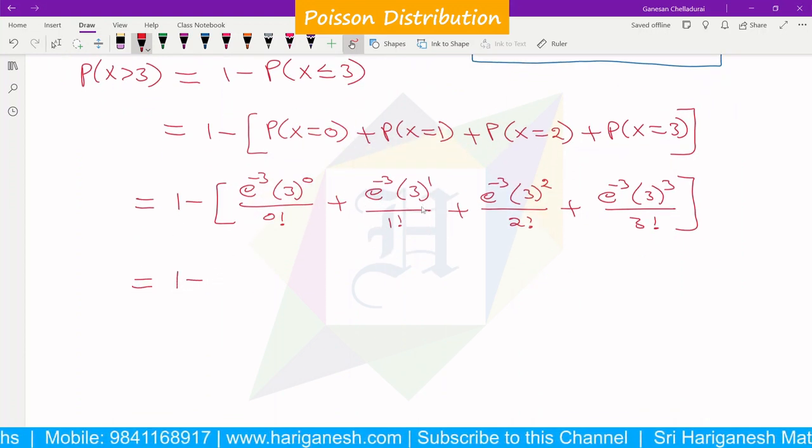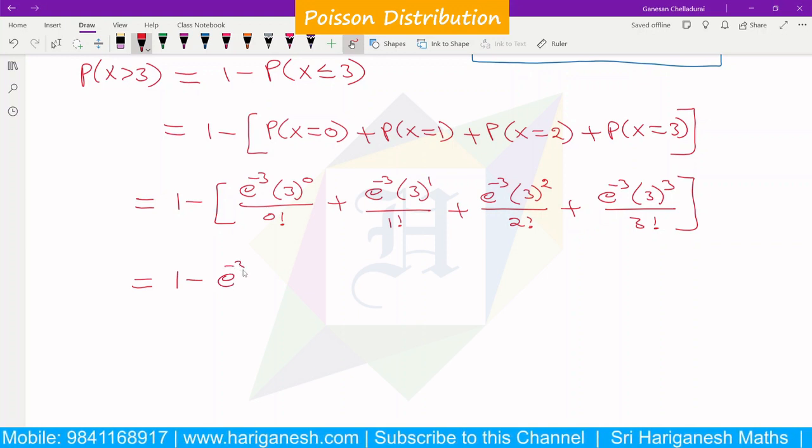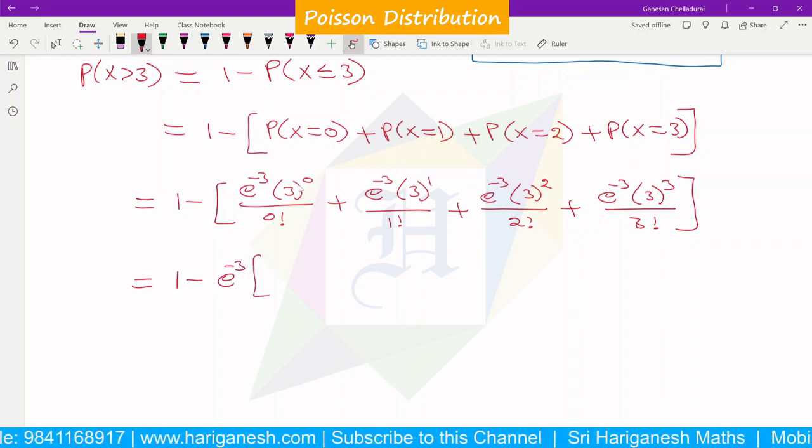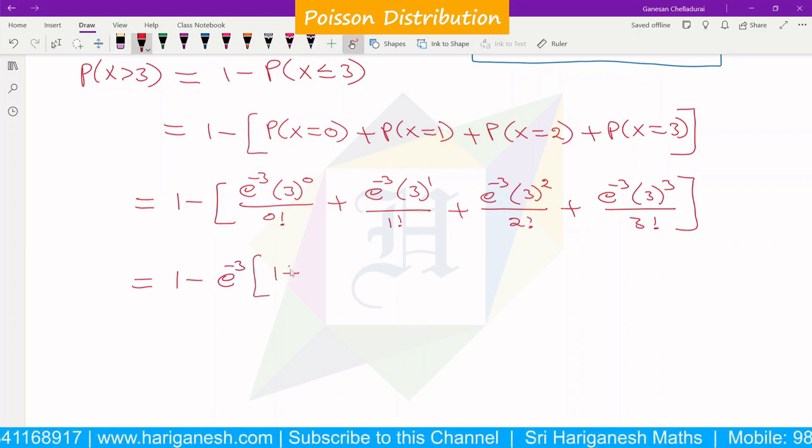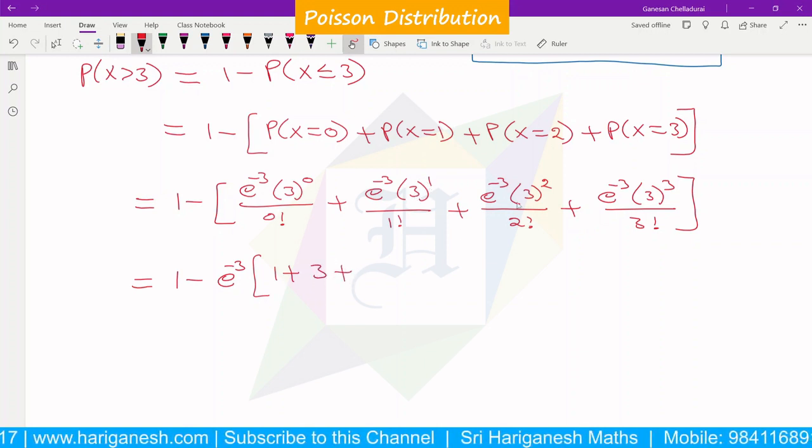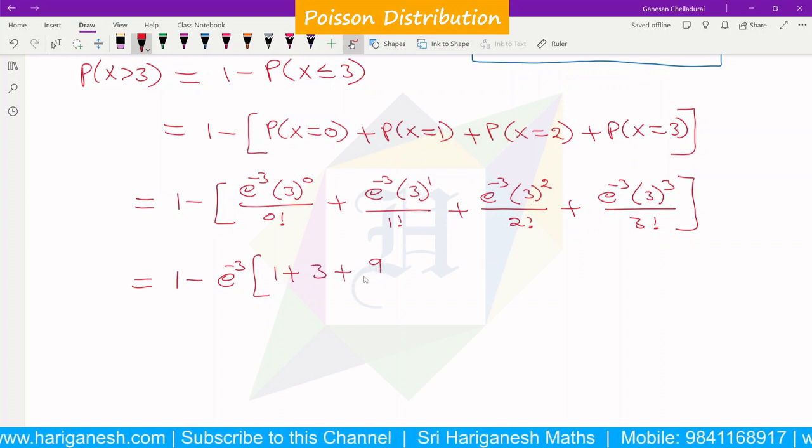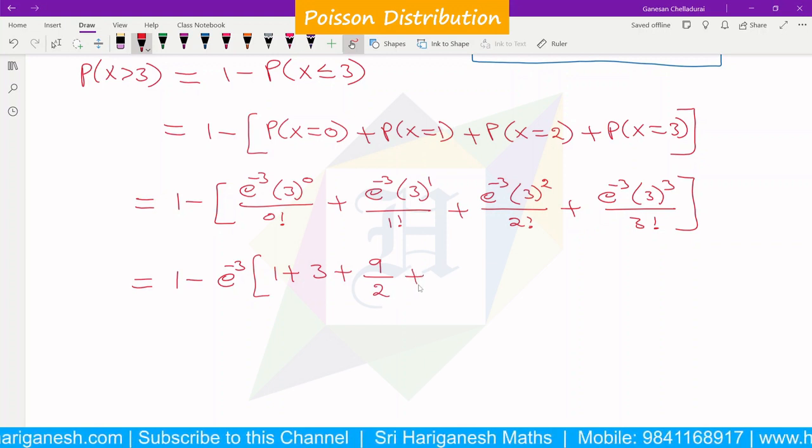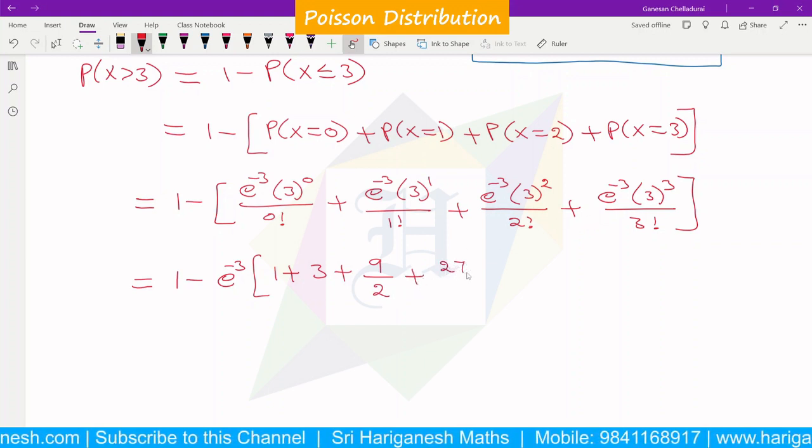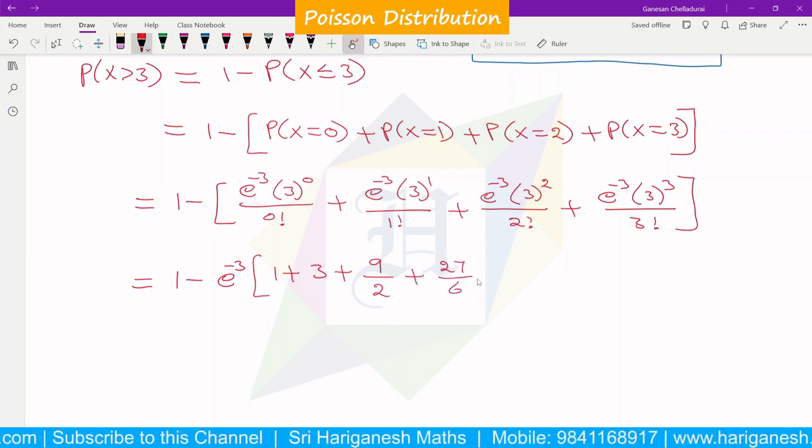So 1 minus e^(-3) times [3^0/0! equals 1, 3^1 equals 3, 3^2 equals 9 divided by 2! equals 2, and 3^3 equals 27 divided by 3! equals 6].